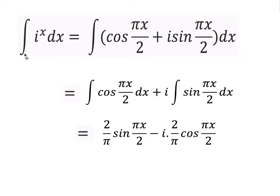Now I'm integrating i to the x, so I can write it as the integral of cos(πx/2) plus i sine(πx/2). I can then split the integration: the integral of cos(πx/2) dx plus i times the integral of sine(πx/2) dx. Using the laws of integration, cosine integrates to sine — flipping the fraction because when I differentiate sine(πx/2) the π and 2 cancel out — and sine(πx/2) integrates to minus 2/π times cos(πx/2), and I'm multiplying by i.